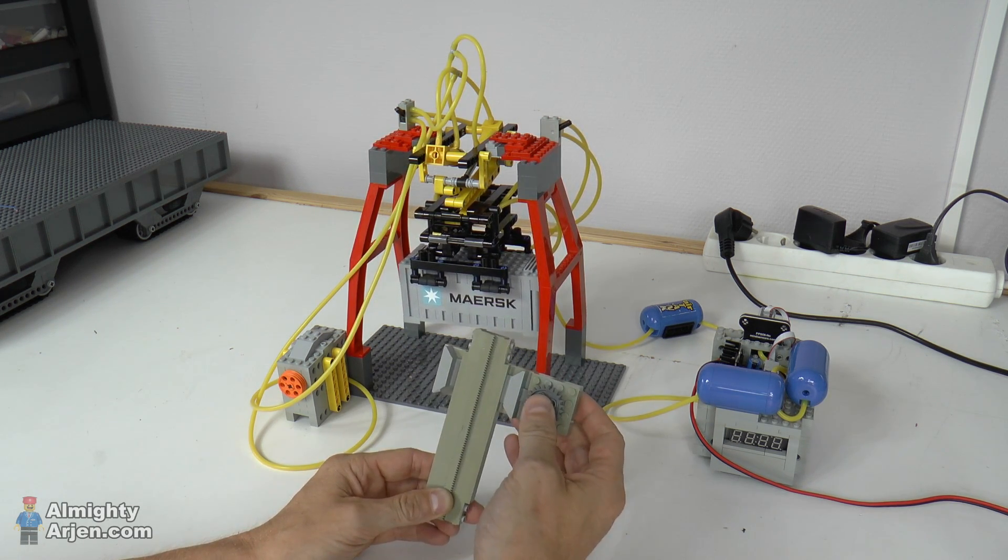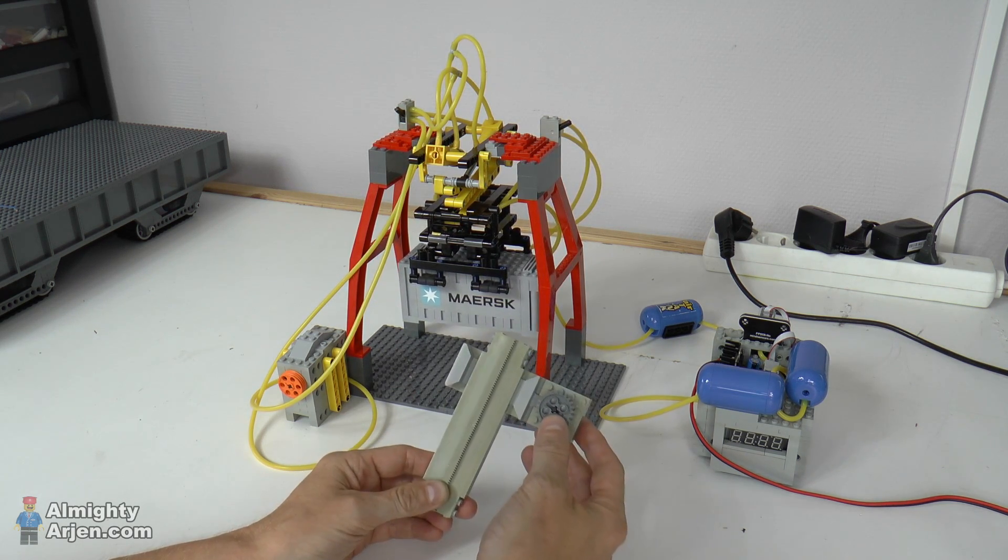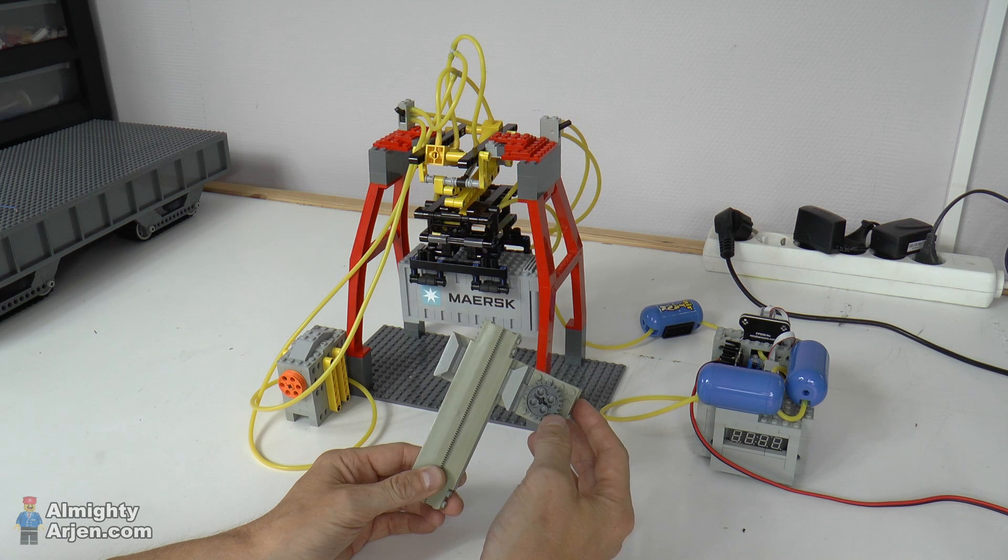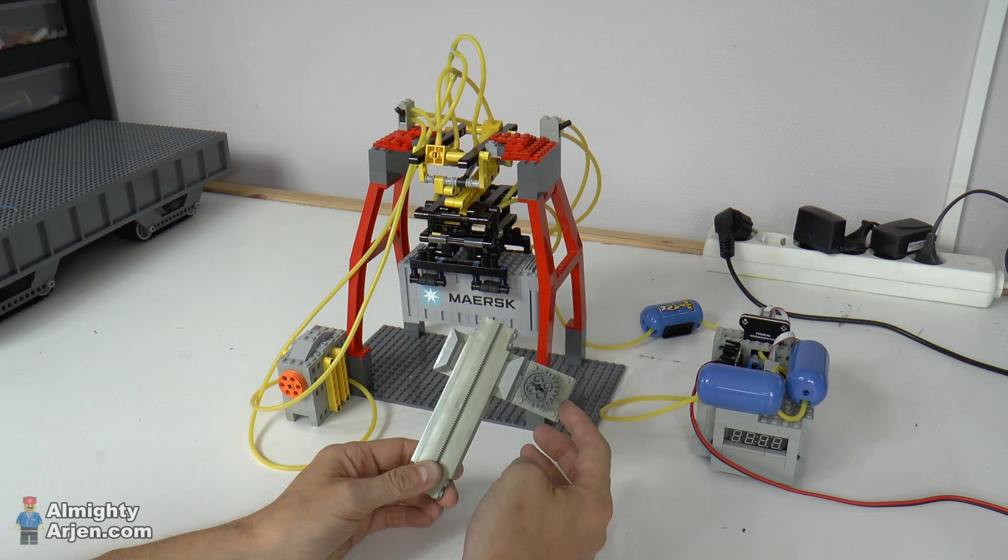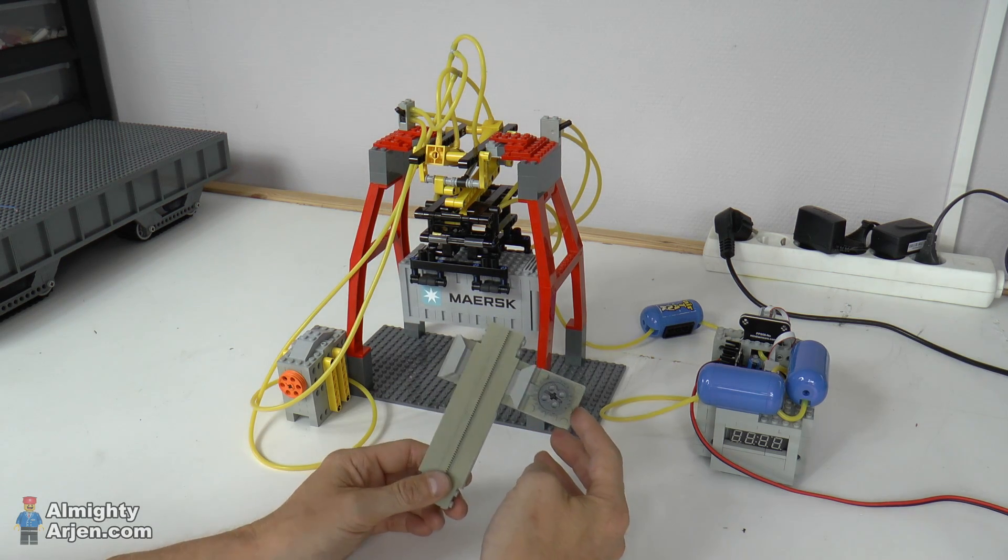Now the problem is that I need to motorize this to make it all automated. So that was the main challenge for the monorail, motorizing this and make sure that I can use it in my automated layout. So I tried different things.